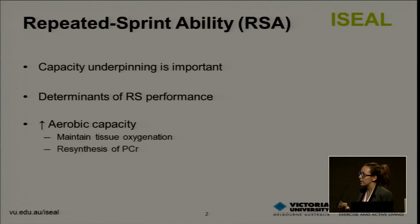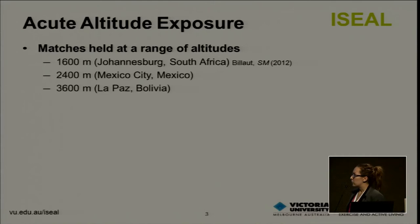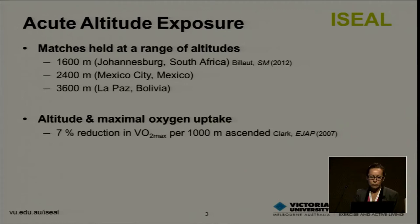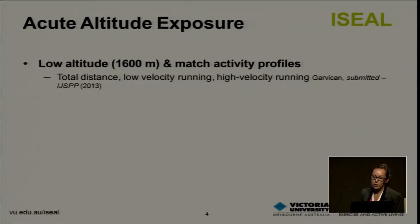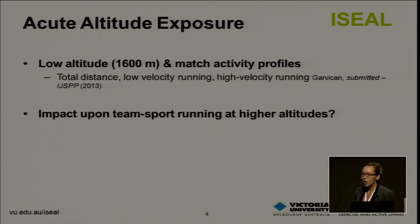We know that team sport matches are held at a range of altitudes up to and including 3,600 metres. Altitude impairs maximal oxygen uptake with roughly a 7% reduction in VO2 max per 1,000 metres ascended. We also know that low altitude, around 1,600 metres, has an effect upon match activity profiles, including total distance, low velocity running and high velocity running. What is less well known, however, is the impact of acute altitude exposure upon team sport running, particularly at the higher altitudes.